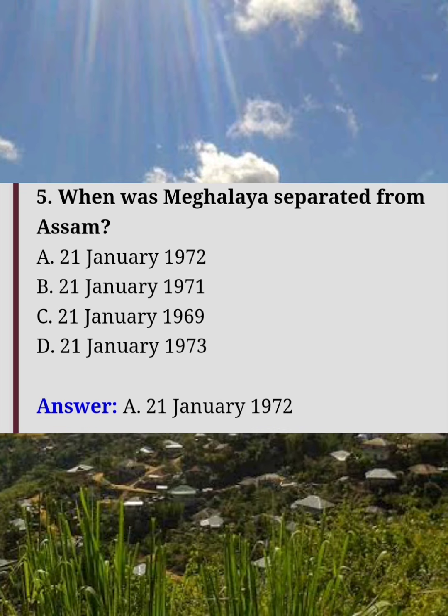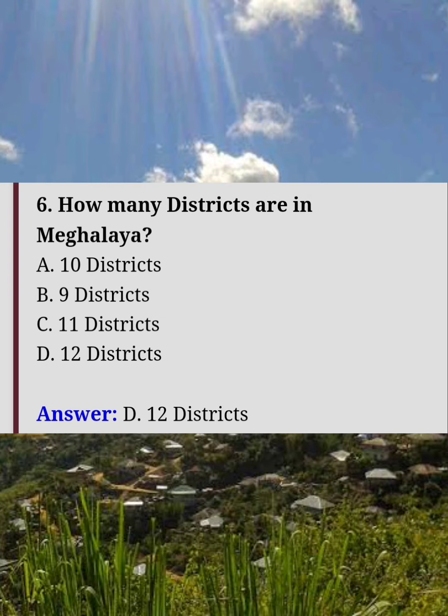When was Meghalaya separated from Assam? Answer A: 21 January 1972. How many districts are in Meghalaya? Answer D: 12 districts.